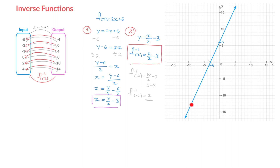Now that we know how to do that, let's learn how to draw a function's inverse function using its graph. On the right-hand side of the screen, we have the graph of y = f(x), which is the same f(x) = 2x + 6 we worked with. Without using this function's expression or the expression for its inverse function, we can use the graph of f(x) to draw its inverse function. For that, all we need are a few rules.